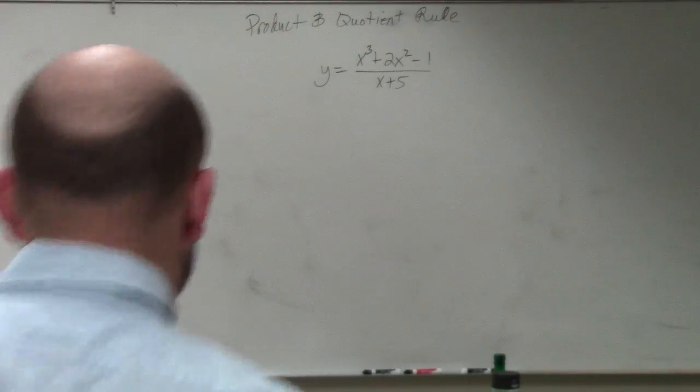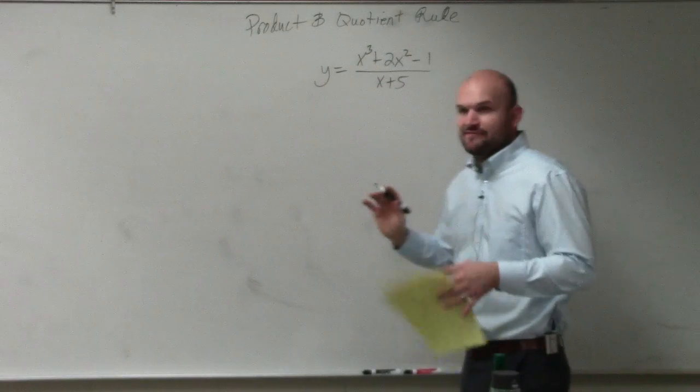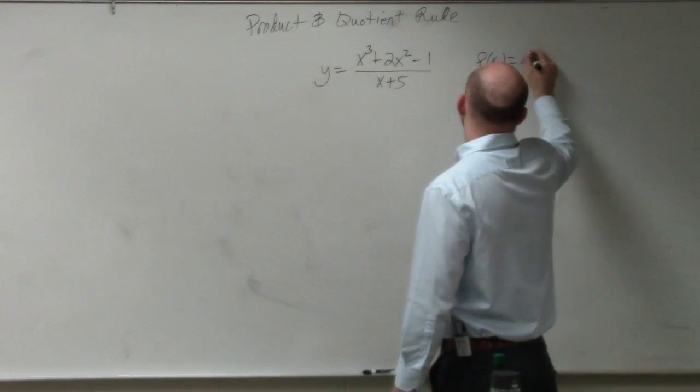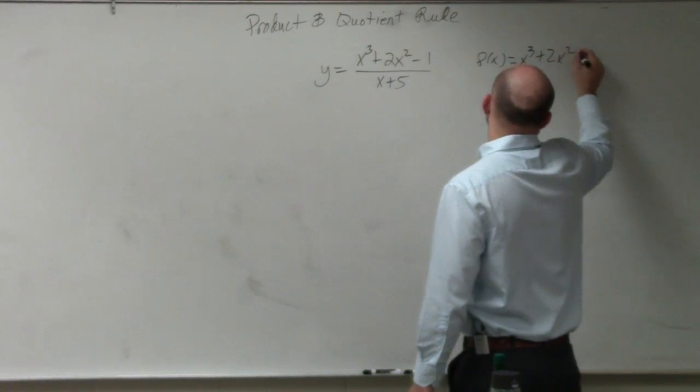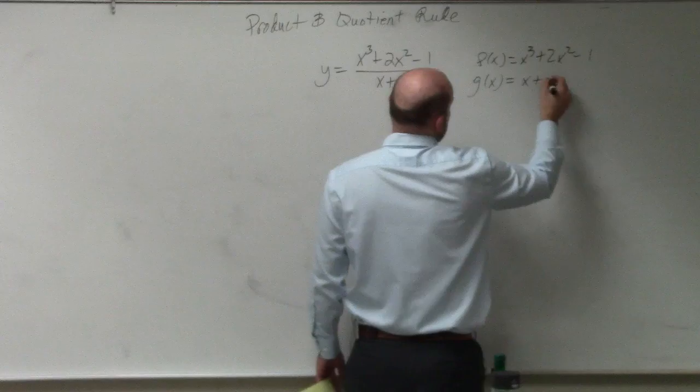All we're simply going to do in this case is, what I like to do, I just like using my f of x and my g of x. I will just rewrite. I'll just say f of x equals x cubed plus 2x squared minus 1, and g of x equals x plus 5.